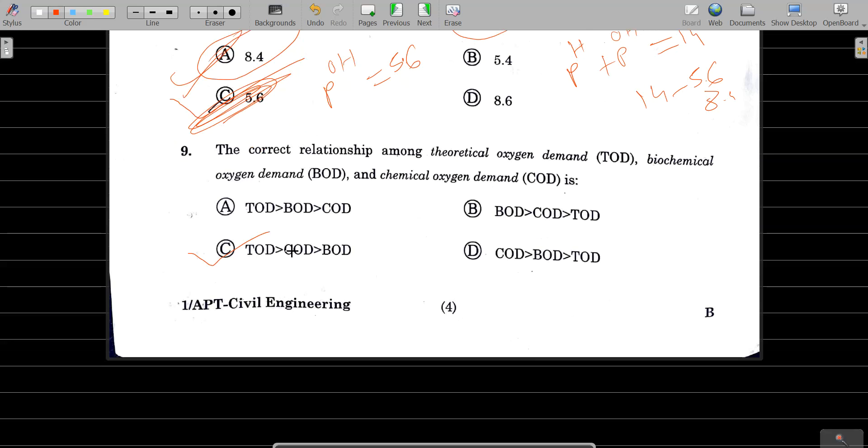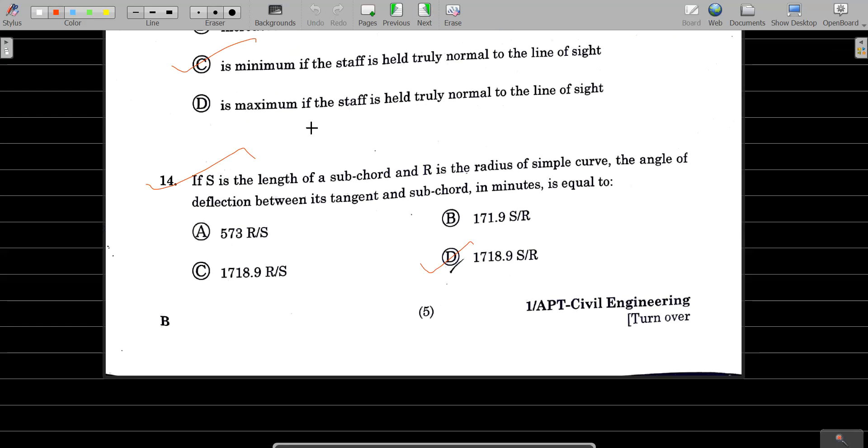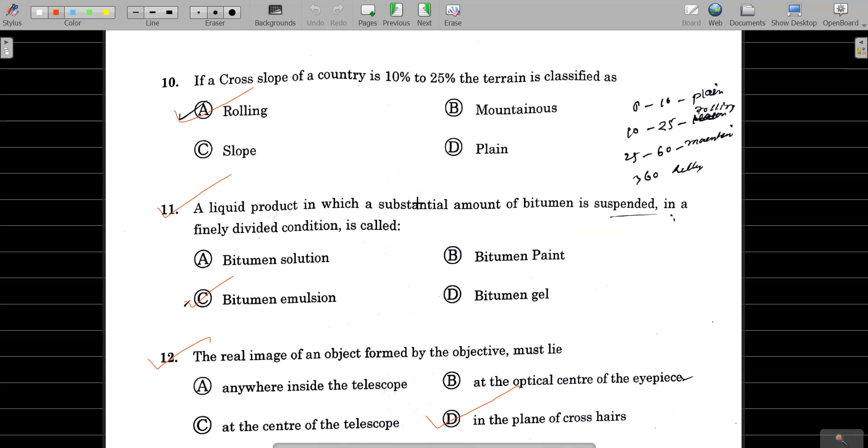Next question: theoretical oxygen demand is the correct answer. Coming to question number 10: cross-slope range. Option A is the correct answer, that is ruling gradient.